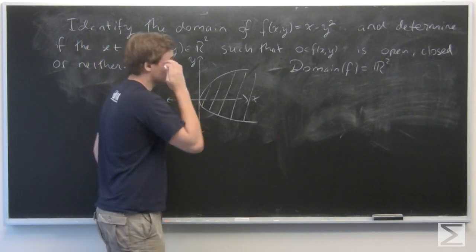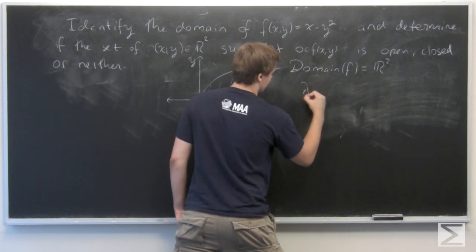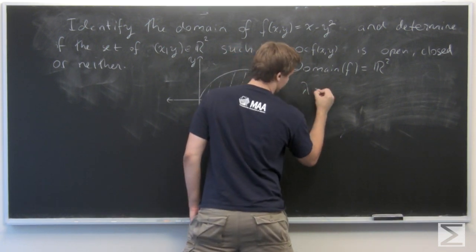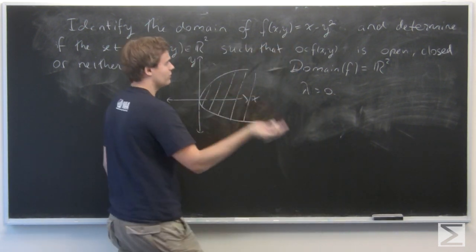So to really see this, notice that given any positive number, say lambda, we can write, well, we can find a preimage of that point in R² of f.